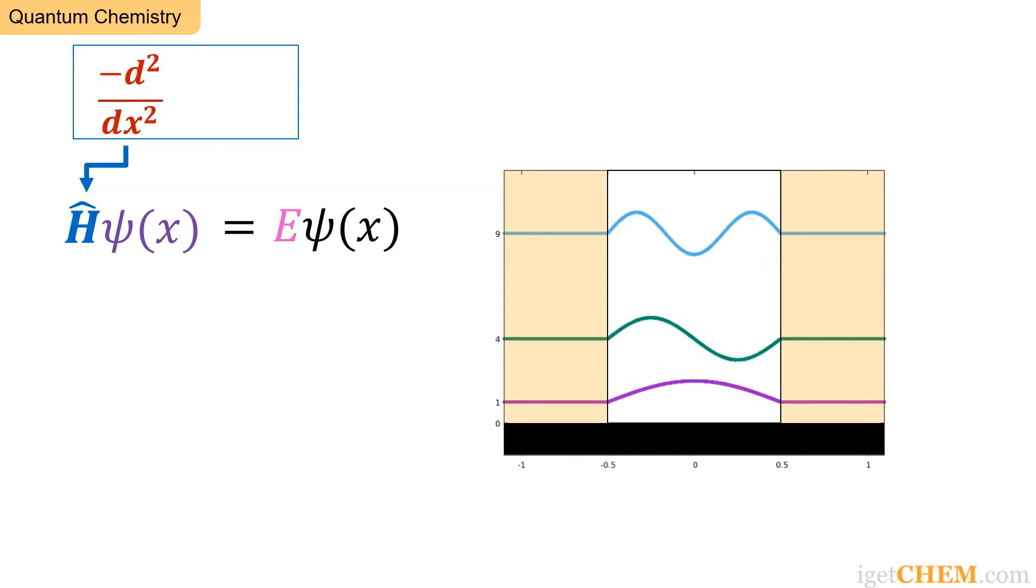The eigenfunctions are, again, sinusoidal functions. But now, to satisfy the special boundary condition, there are cosine functions of half-integer periods, that is, one-half, three-halves, five-halves periods, etc., that fit within the allowed region.